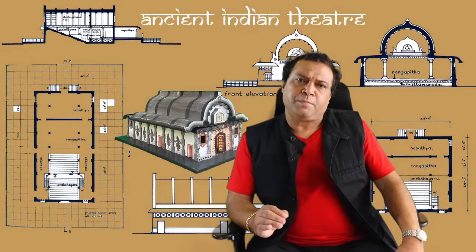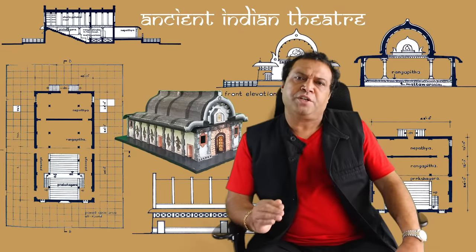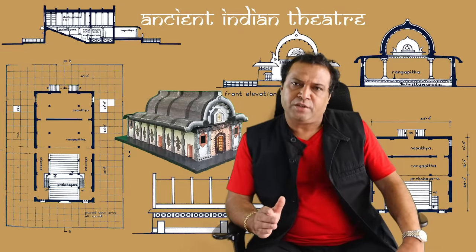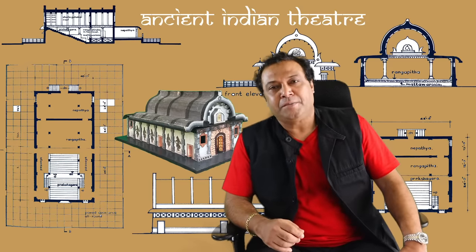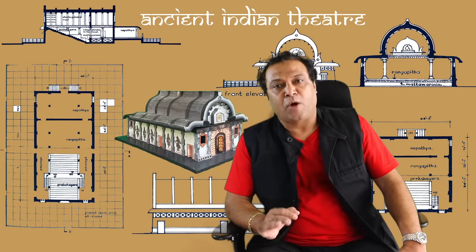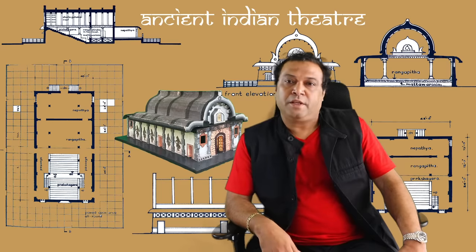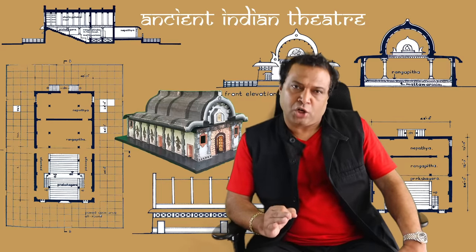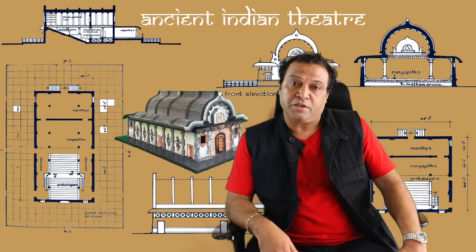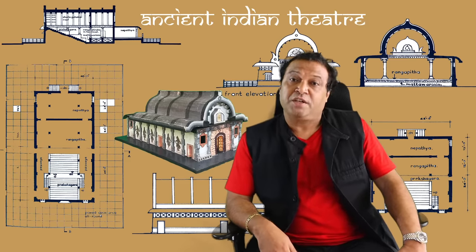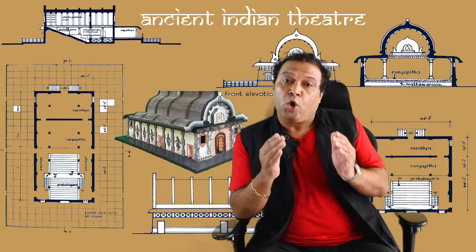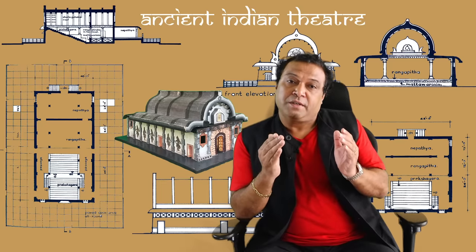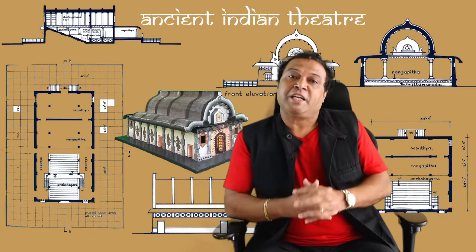Each type is subdivided into three according to their dimensions: Jyeshtha, large; Madhyama, medium; and Kanishtha, small. The large theatre is 108 hastas long, the medium is 64 hastas, and the small theatre is 32 hastas long. One hasta is equal to one and a half feet. There are thus nine types of theatres.